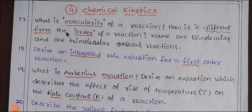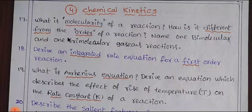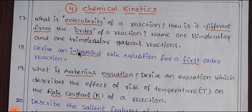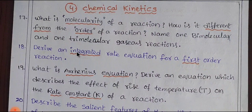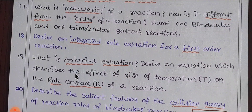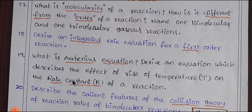Let's talk about Chemical Kinetics. In Chemical Kinetics, there are order and molecularity and their differences. Integrated rate equations — first order and zero order — are all covered. Also, the Arrhenius equation and the effect of temperature are included.